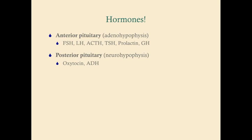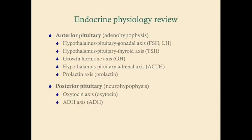The hormones we're going to talk about here are the anterior pituitary hormones — FSH, LH, ACTH, TSH, prolactin, and GH — and the posterior pituitary hormones, which are oxytocin and ADH. The anterior pituitary is otherwise known as the adenohypophysis, and the posterior pituitary is the neurohypophysis, because they originate from different embryologic precursor tissues. So they function quite differently, but they're both lumped into what's called the pituitary.